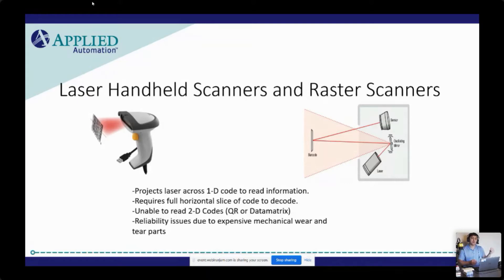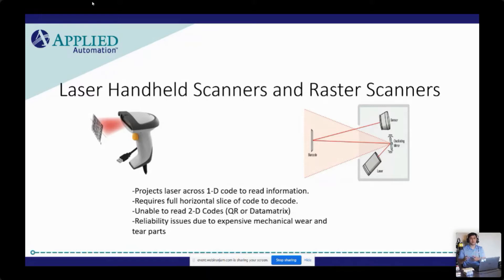The issue with laser scanners and raster scanners inherently is that they don't have the ability to read 2D barcodes — one of the significant downfalls of that technology. Also, raster scanners have reliability issues. The oscillating motor is a mechanical piece, so you're going to have wear and tear over time, which eventually leads to either spending a lot of money to repair or completely replace the scanner. We like the newest technology to be a robust solution that will last years to come.